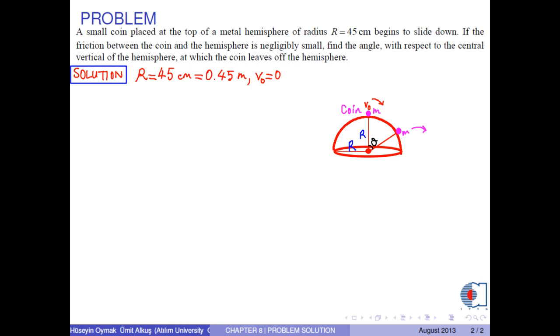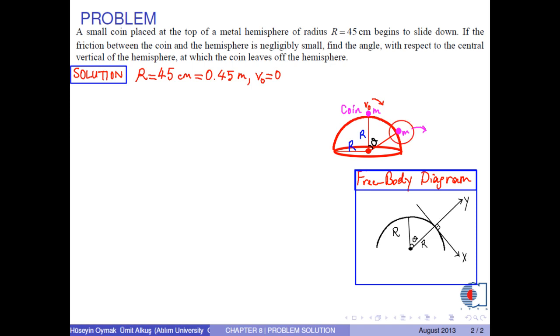First of all, let us draw the free body diagram of the coin at the point where it leaves off the hemisphere. We choose the appropriate coordinate axis. Next, we represent the mass by a big dot.